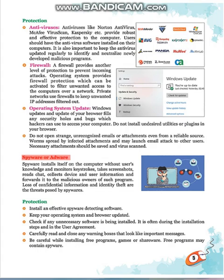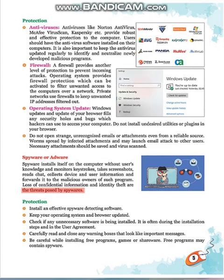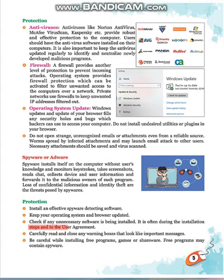Spyware installs itself on the computer without the user's knowledge and monitors keystrokes, takes screenshots, reads chat, collects device and user information, and forwards it to malicious owners of such programs. Loss of confidential information and identity theft are the threats posed by spyware. Protection: Install an effective spyware detecting software. Keep your operating system and browser updated. Check if any unnecessary software is being installed — it is often hidden during installation steps and in the user agreement. Carefully read and close any warning boxes that look like important messages. Be careful while installing free programs, games or shareware, as free programs may contain spyware.